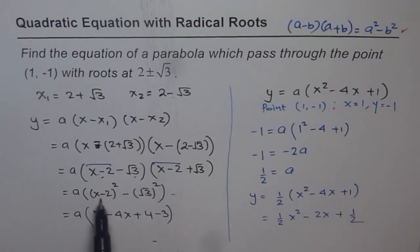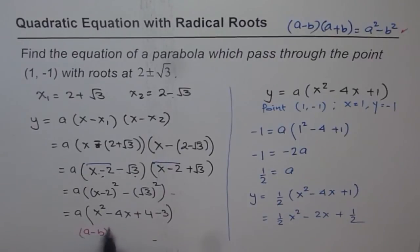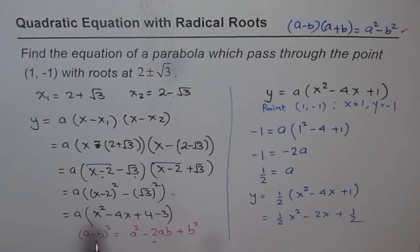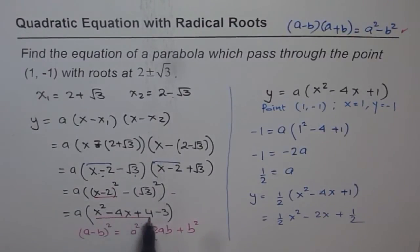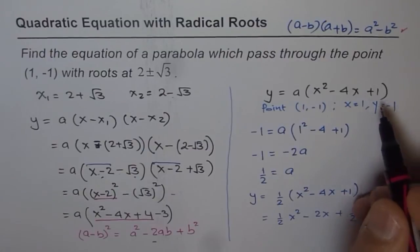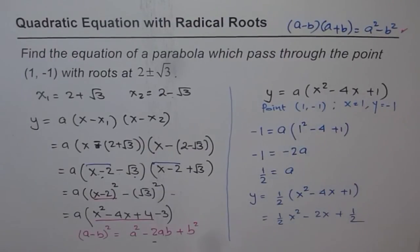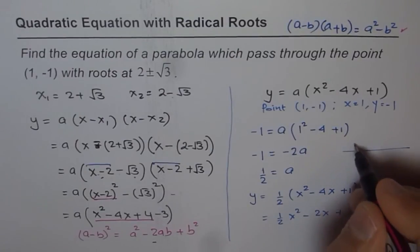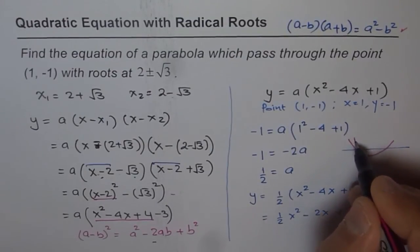We then applied the identity (a minus p) squared equals a squared minus 2ab plus b squared to expand (x minus 2) squared and got three terms. This gave us our equation, which actually represents a family of parabolas passing through the two roots. We can sketch this: there could be many different parabolas going through these two x-intercepts.